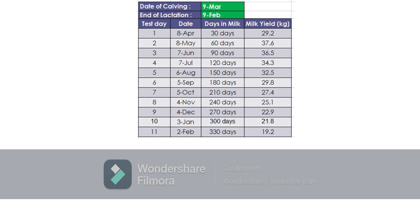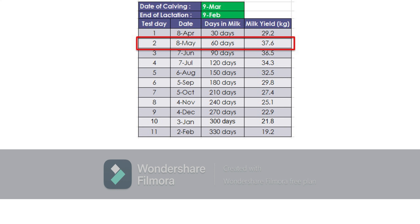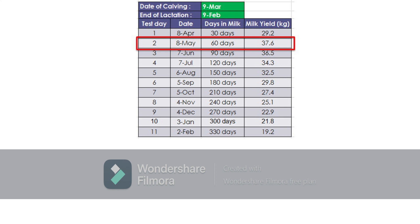Let's use this hypothetical data as an example. Suppose that the date of calving is March 9 and the end of lactation is February 9 of the following year. The first test day was done on April 8 when the animal is on the 30th day of lactation and the milk yield recorded on that day was 29.2 kilograms. The second test day was done on May 8 when the animal is on the 60th day of lactation and the milk yield recorded on that day was 37.6 kilograms. The rest of the test days were done as indicated in the table, with a total of 11 test days or recording dates.